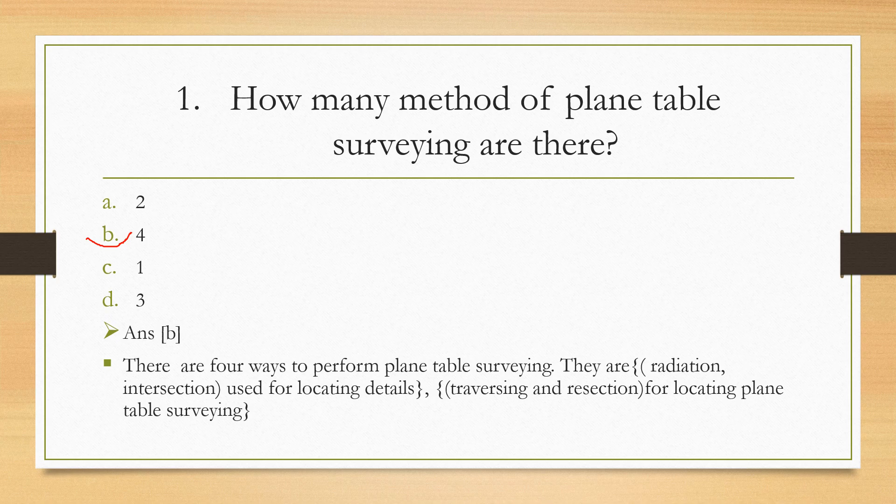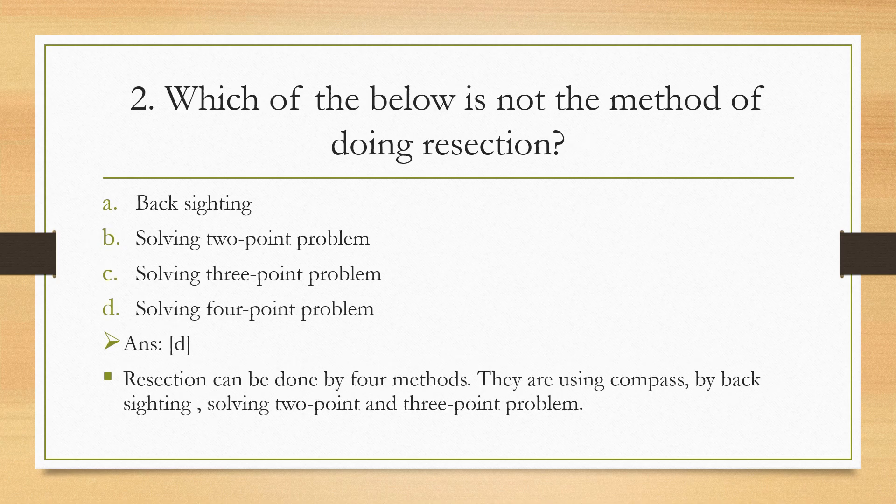Next question: Which of the below is not the method of doing resection? Option A: back sighting. B: solving two-point problem. C: solving three-point problem. D: solving four-point problem. And the answer is solving four-point problem.